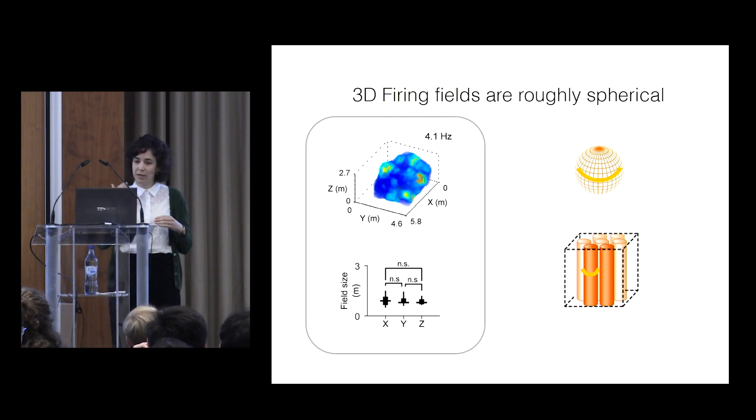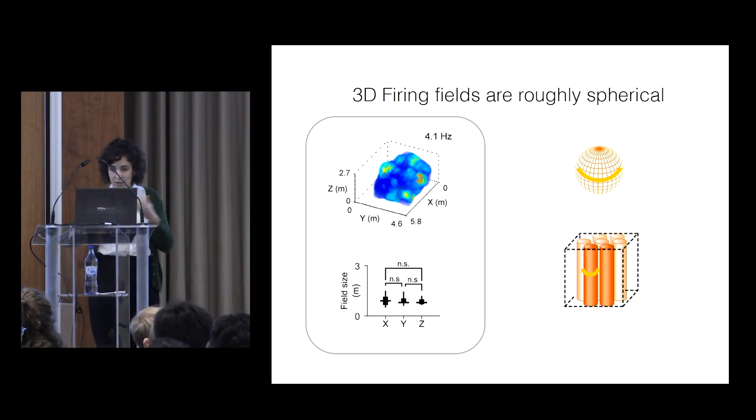So we go cell by cell and we compare the field size on the y-axis along the x, y, and z axes. And we see that they don't really differ from each other. There's no systematic elongation along any one of the axes.